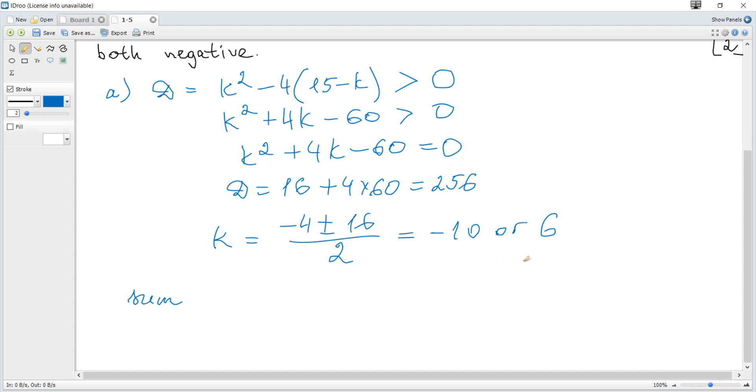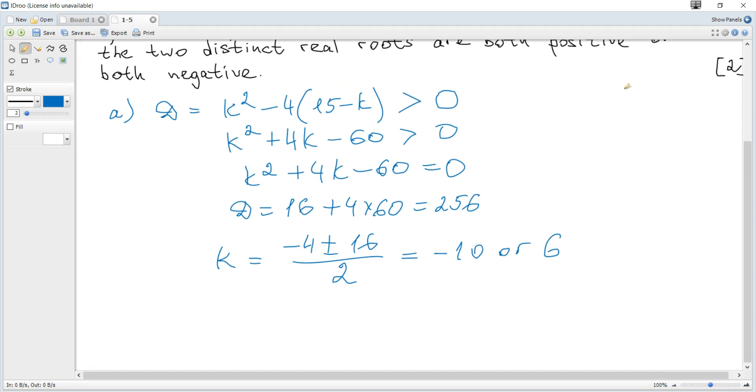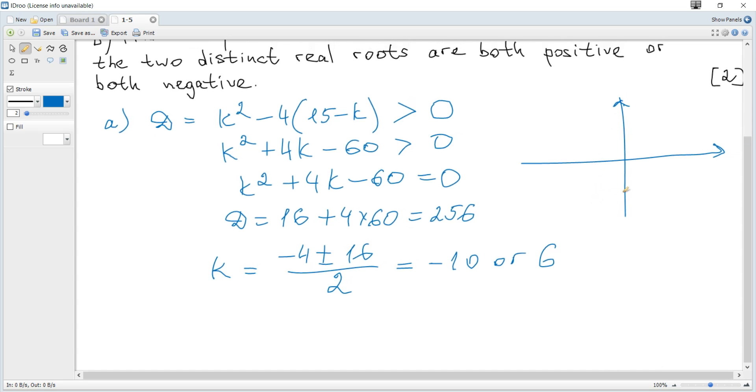We can illustrate this using a parabola because the graph of a quadratic function is a parabola. Since the coefficient in front of k² is 1, we can see this function is a concave up parabola.